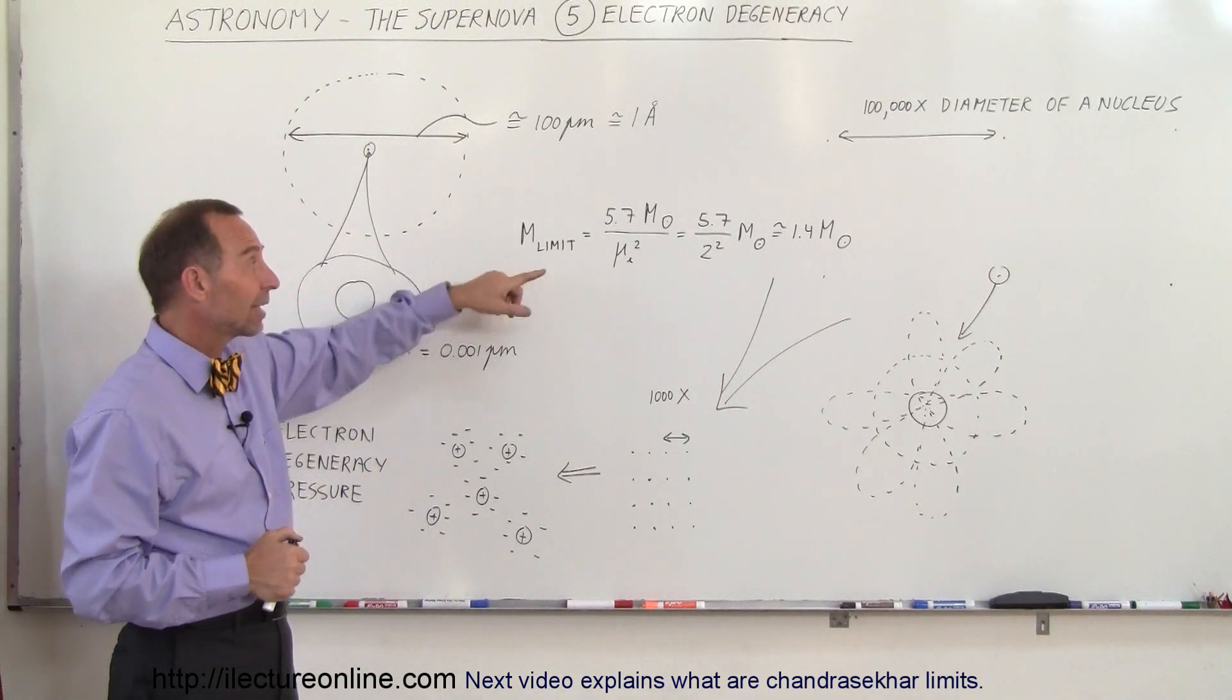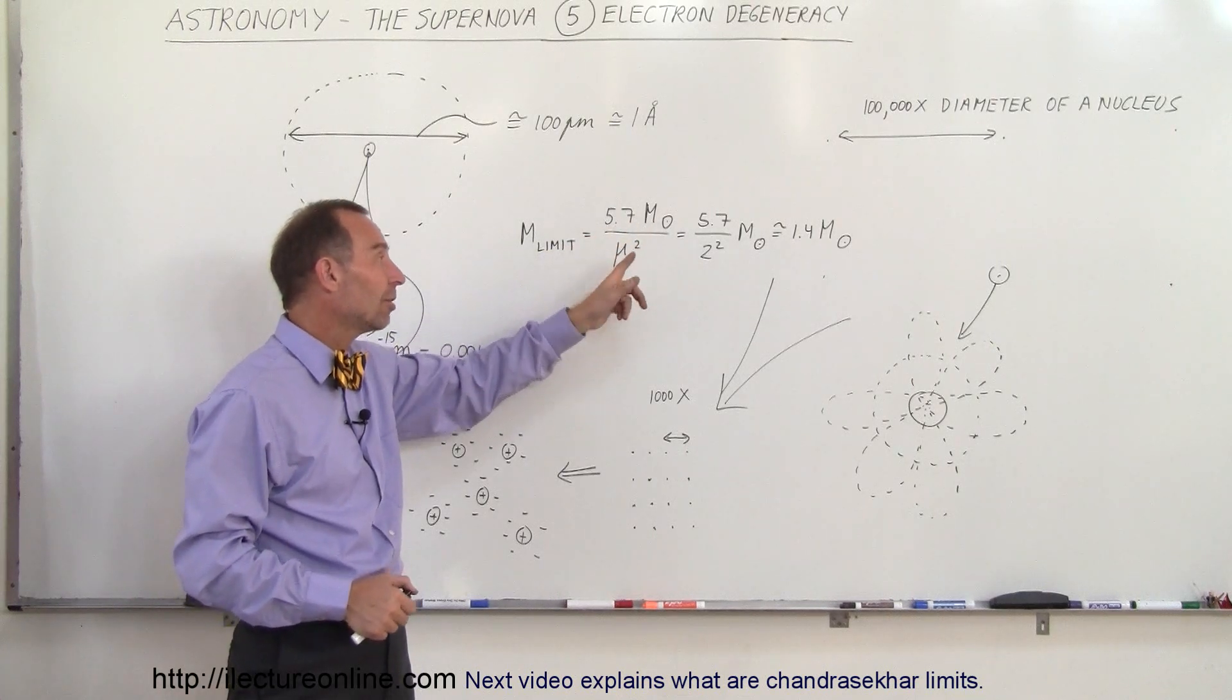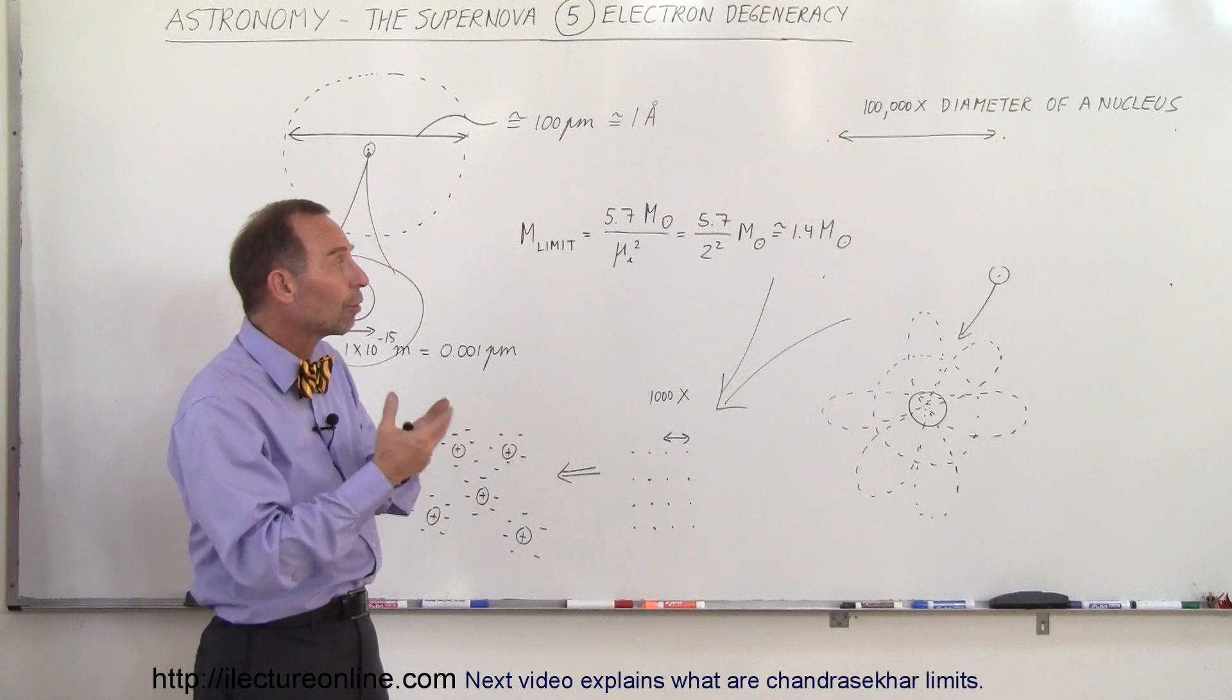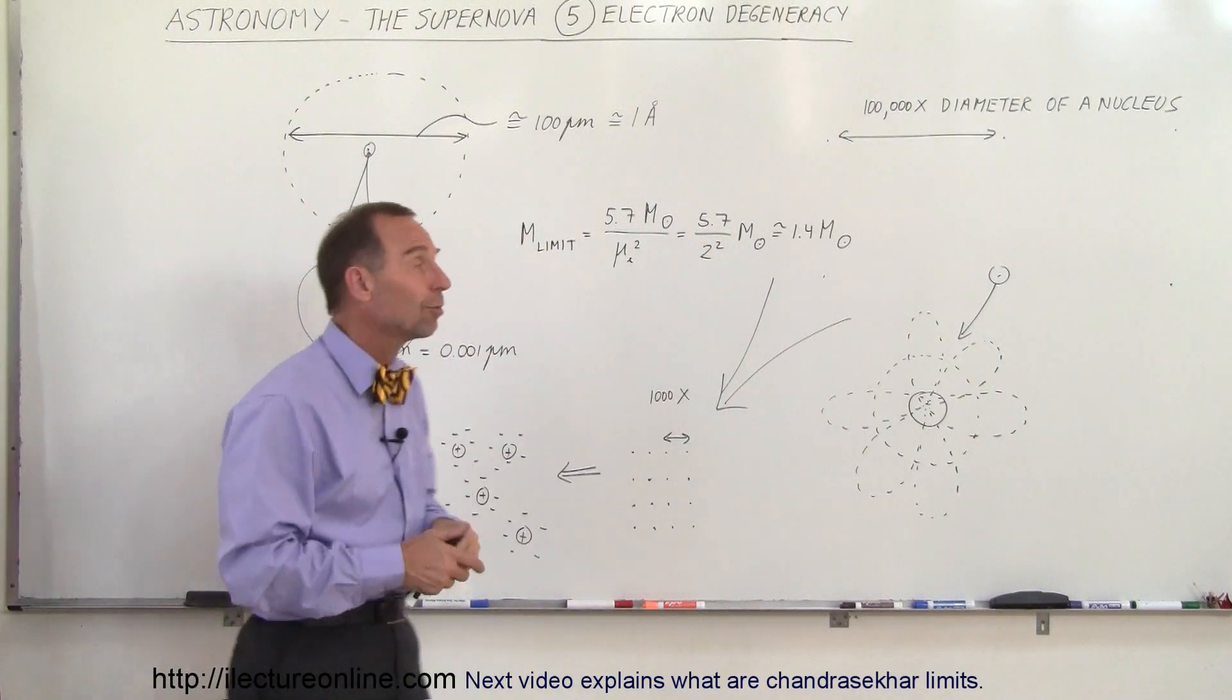Chandrasekhar had calculated that this was about 5.7 times the mass of the Sun divided by mu sub electron squared, which is 2 squared or 4. If you take 5.7 divided by 4, you get about 1.4 times the mass of the Sun.